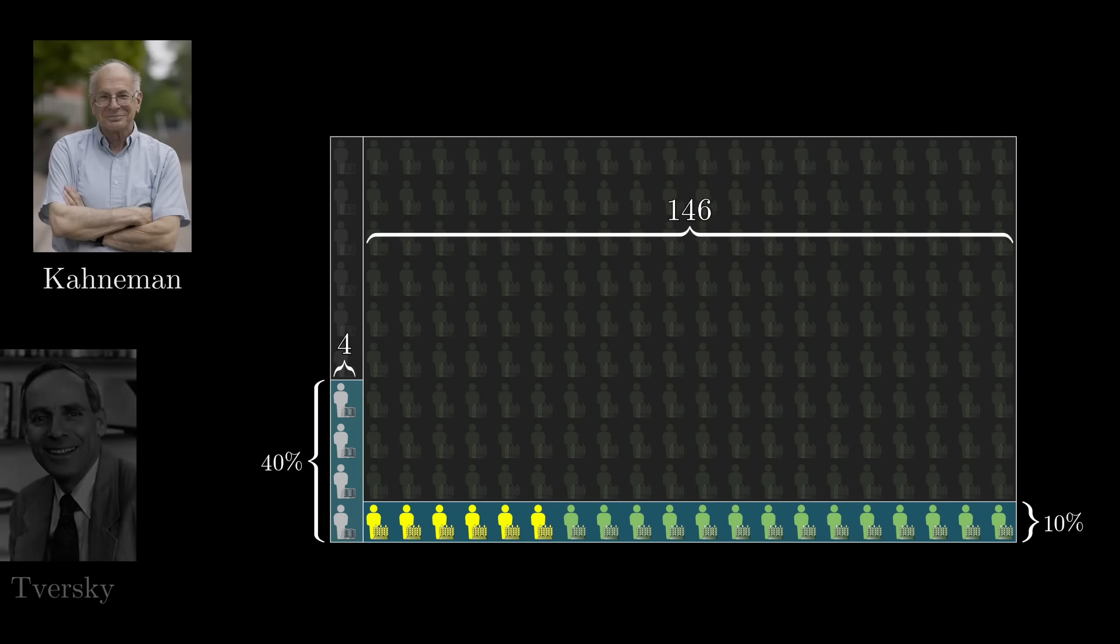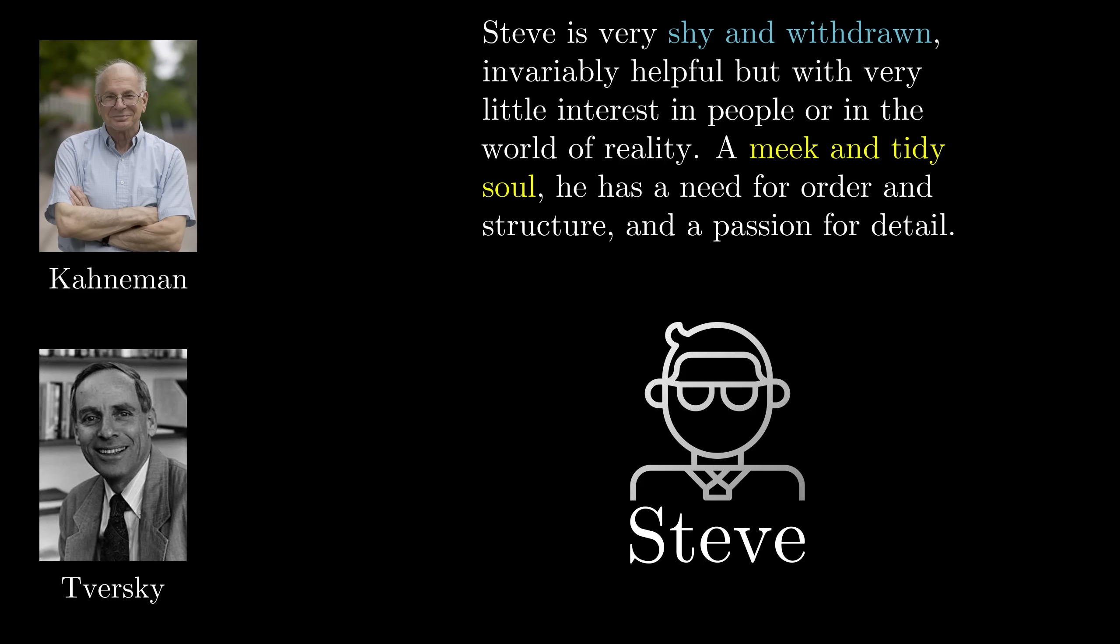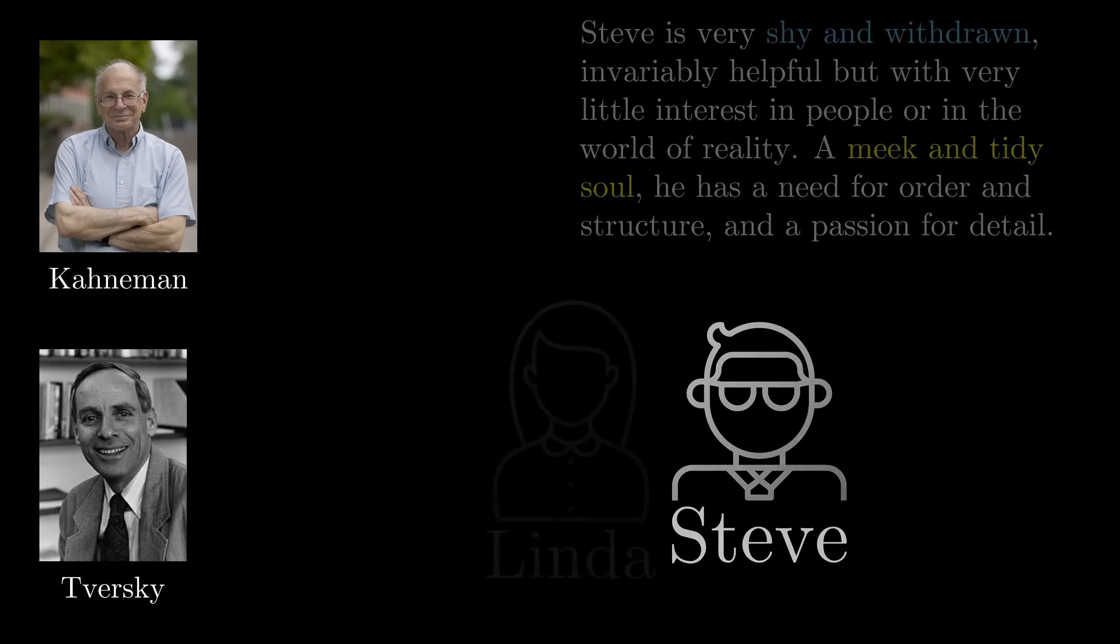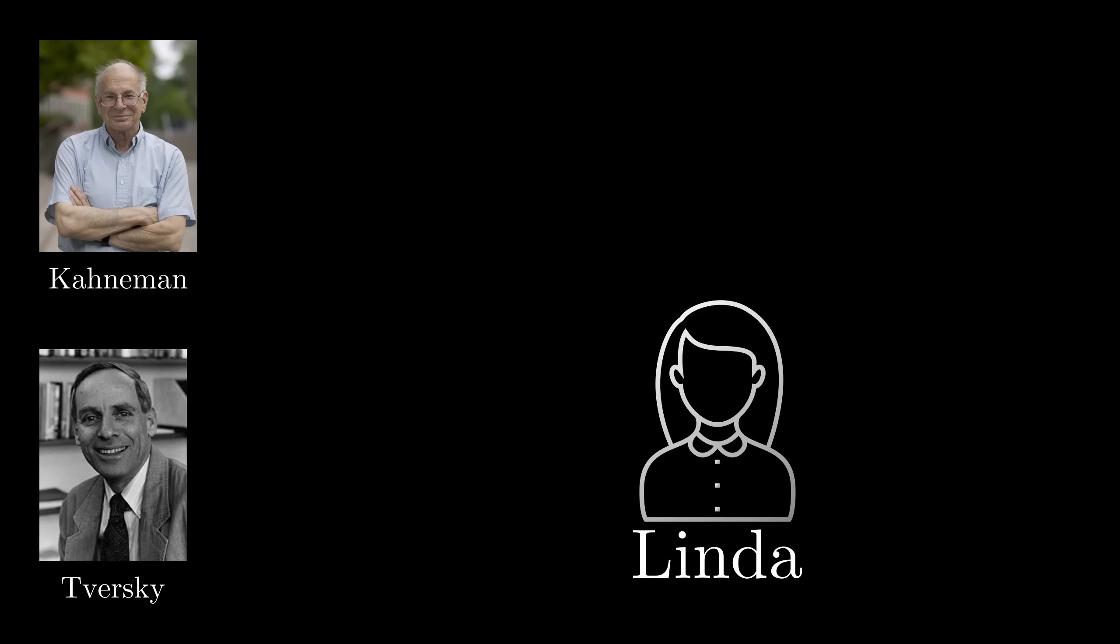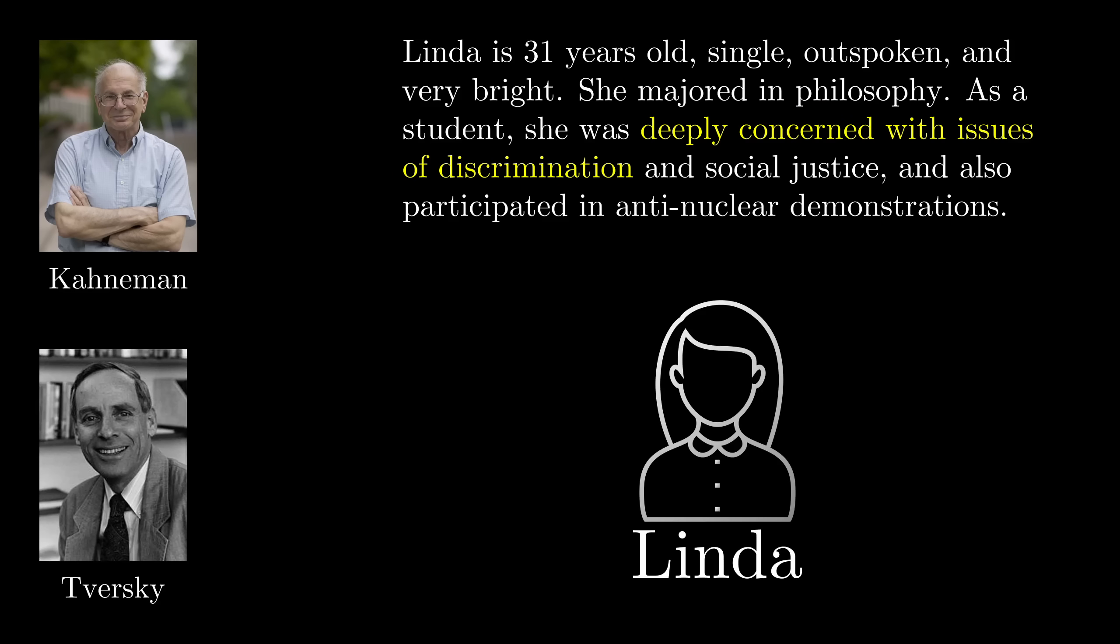There's actually another Kahneman and Tversky result which is all about this, and it's interesting enough to interject here. They did this experiment that was similar to the one with Steve but where people were given the following description of a fictitious woman named Linda. Linda is 31 years old, single, outspoken, and very bright. She majored in philosophy. As a student, she was deeply concerned with issues of discrimination and social justice and also participated in the anti-nuclear demonstrations.